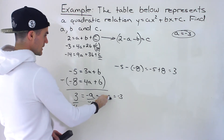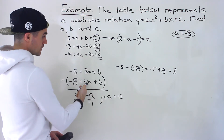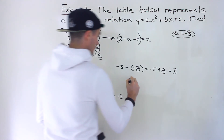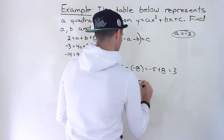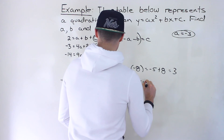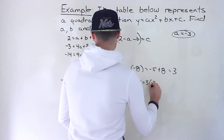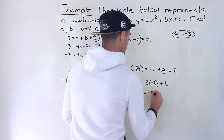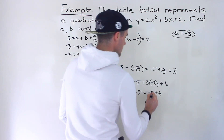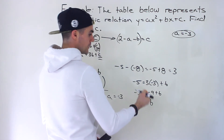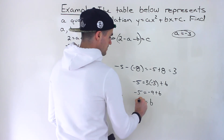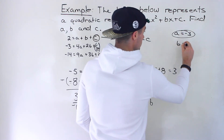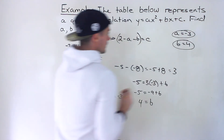Now we take a equals negative 3 and plug it into either equation to find b. Let's use the first one: negative 5 equals 3 times negative 3 plus b, which gives negative 5 equals negative 9 plus b. So b equals negative 5 plus 9, which gives us b equals 4.